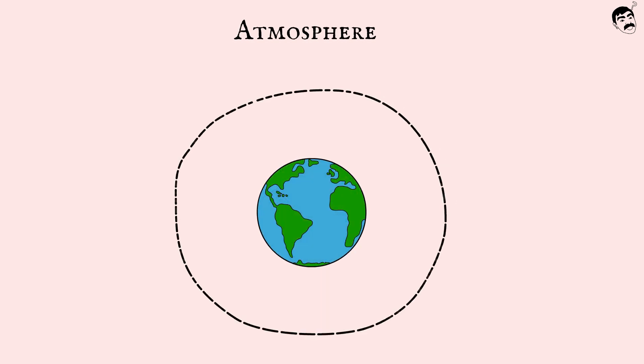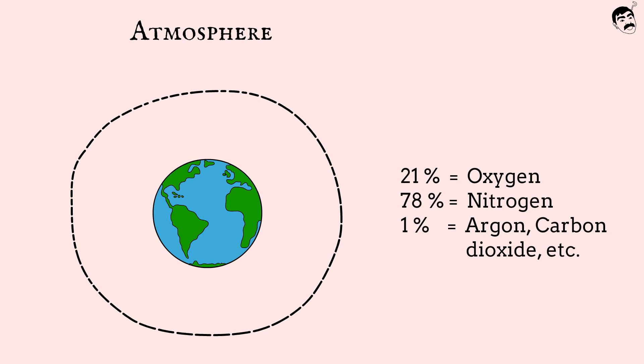21% of the Earth's atmosphere is oxygen, 78% is nitrogen, and 1% are other gases.